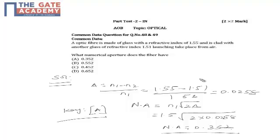which is 1.55 minus 1.51 by 1.55, this comes as 0.0258. So numerical aperture is n1 into root of 2 into the normalized difference, which comes as 1.5 under root of 2 into 0.0258, which comes as 0.352. Here the correct option is A.